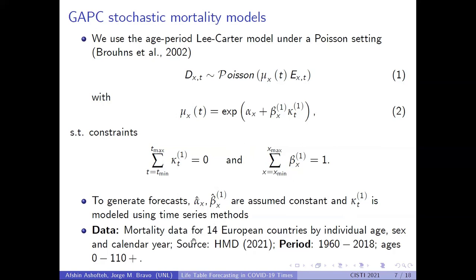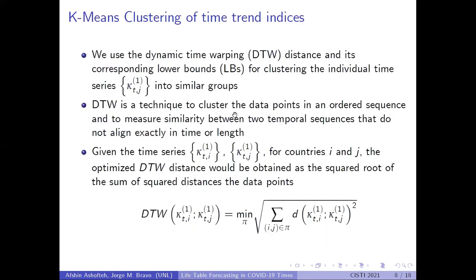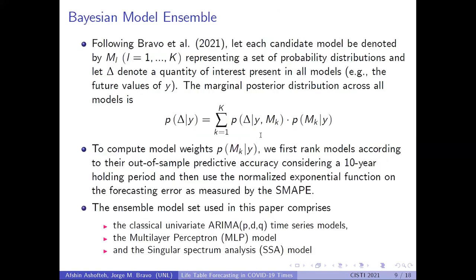The dataset comprises data for 14 European countries from 1960 to 2018 provided by the Human Mortality Database, to which we then add more recent data concerning COVID deaths. For clustering, we use k-means clustering for time-trend indices, applying dynamic time warping distance as a similarity measure to cluster individual country time series into similar groups. Dynamic time warping optimizes by computing the square root of the sum of squared distances between data points across the two time series.